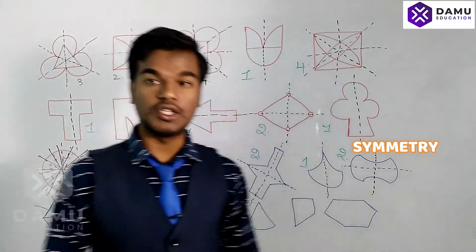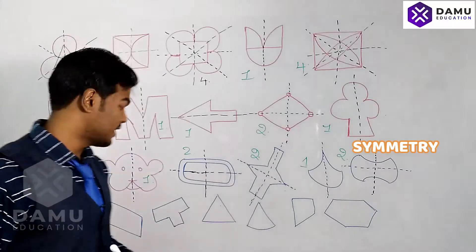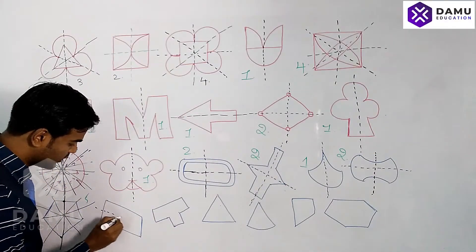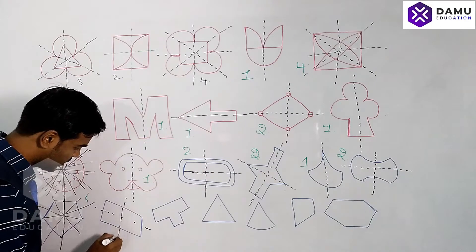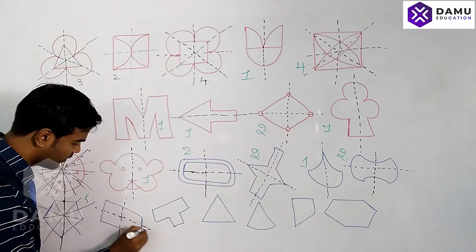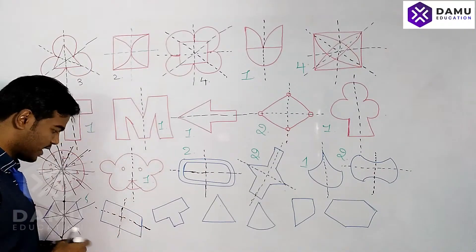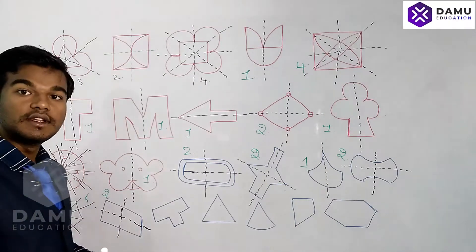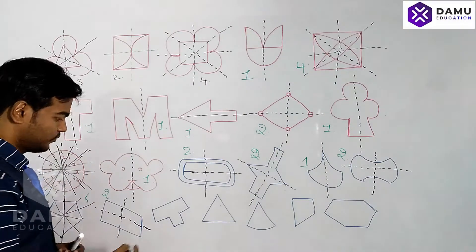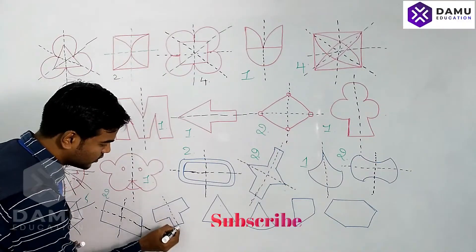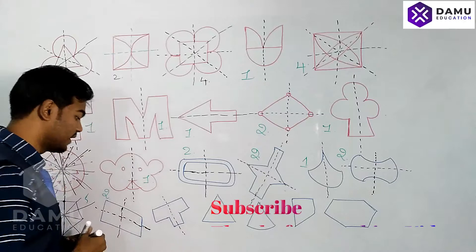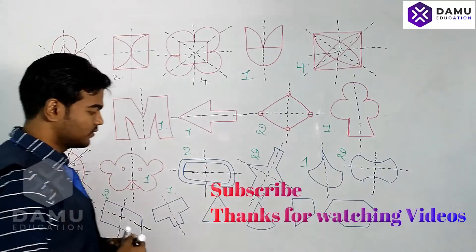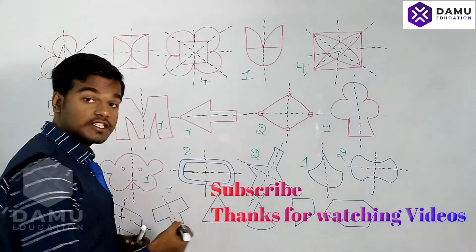A rectangle always has only two lines of symmetry, while a square has four. For this shape we can draw only one line of symmetry — a vertical line of symmetry.